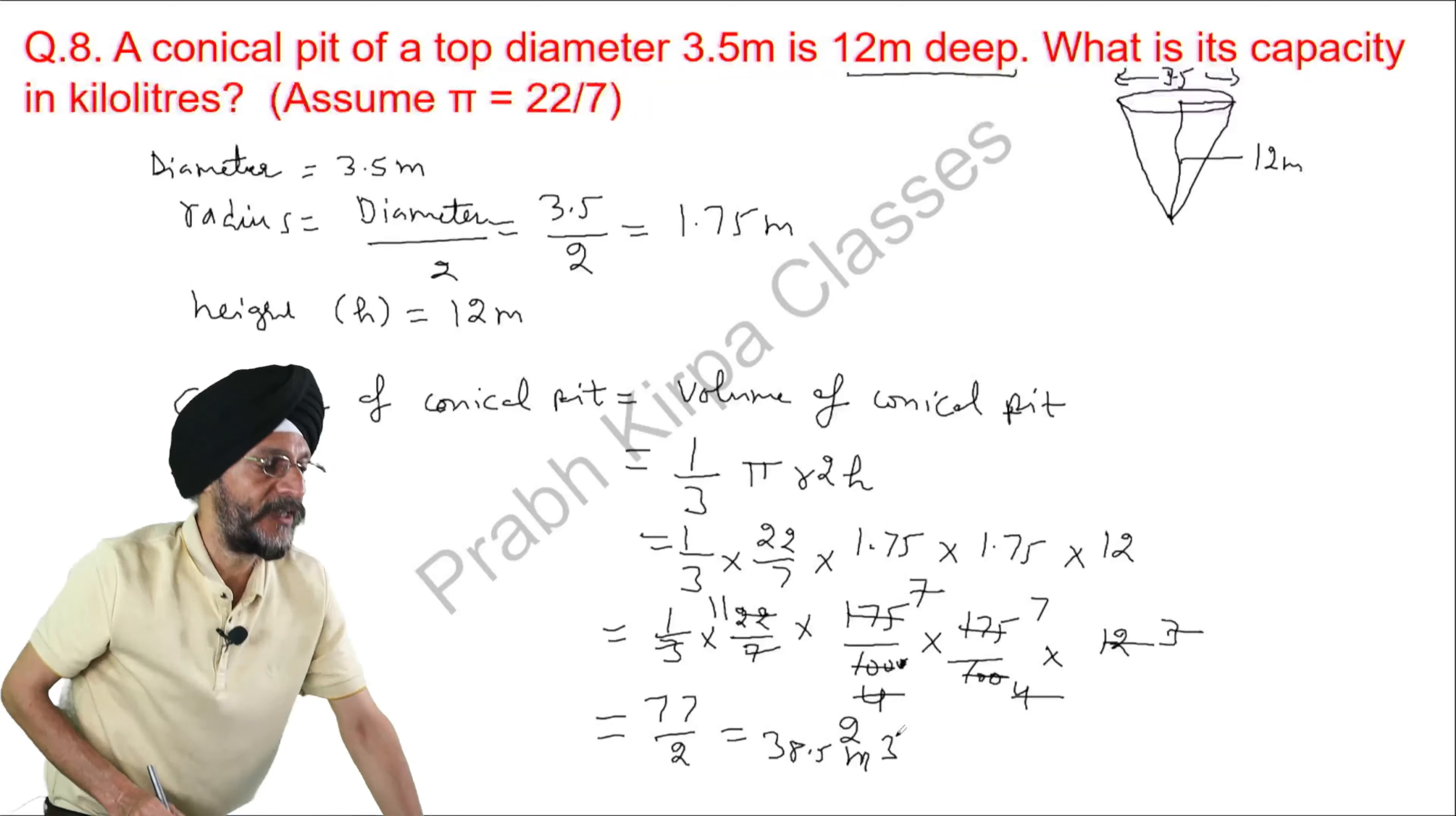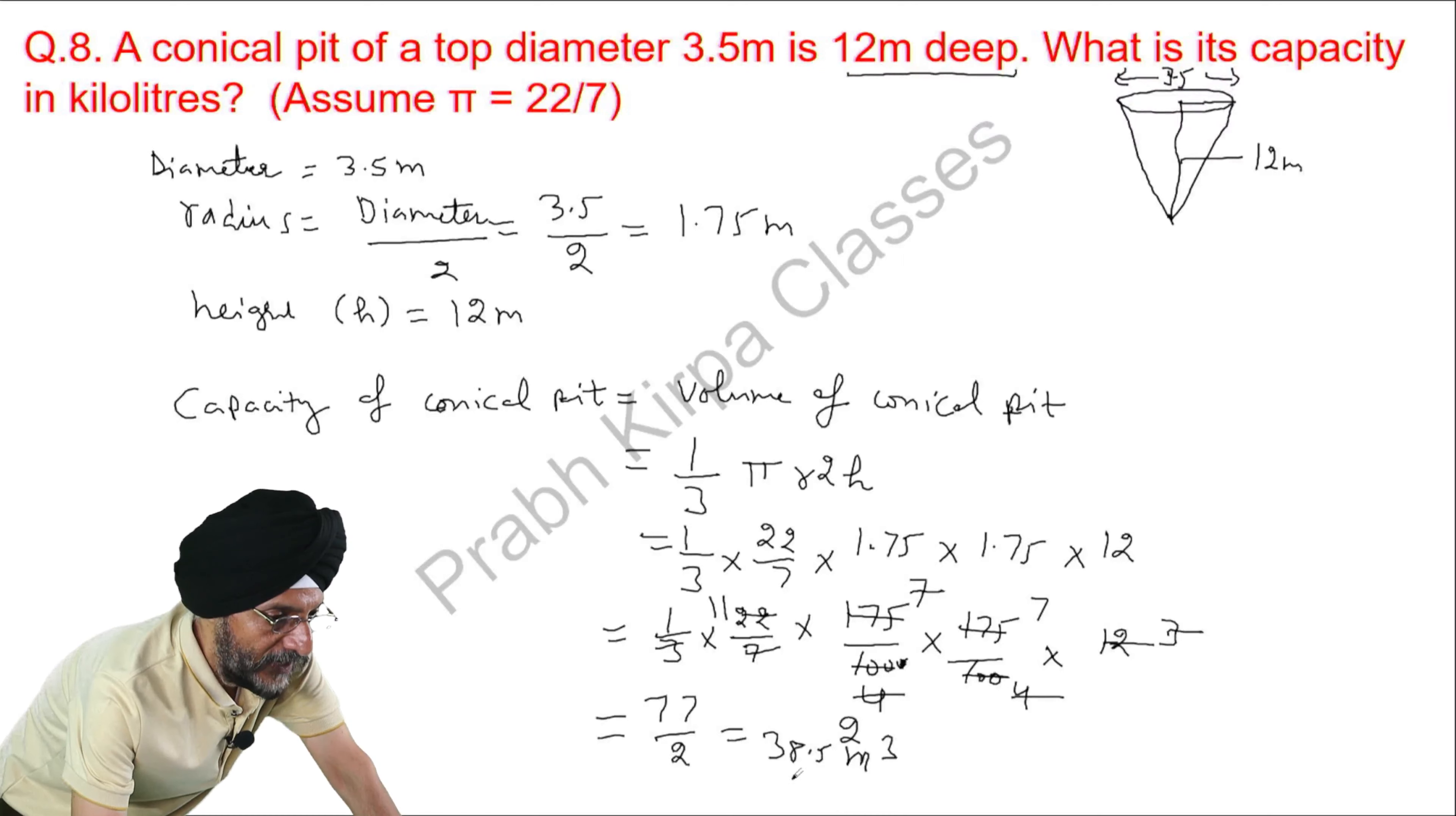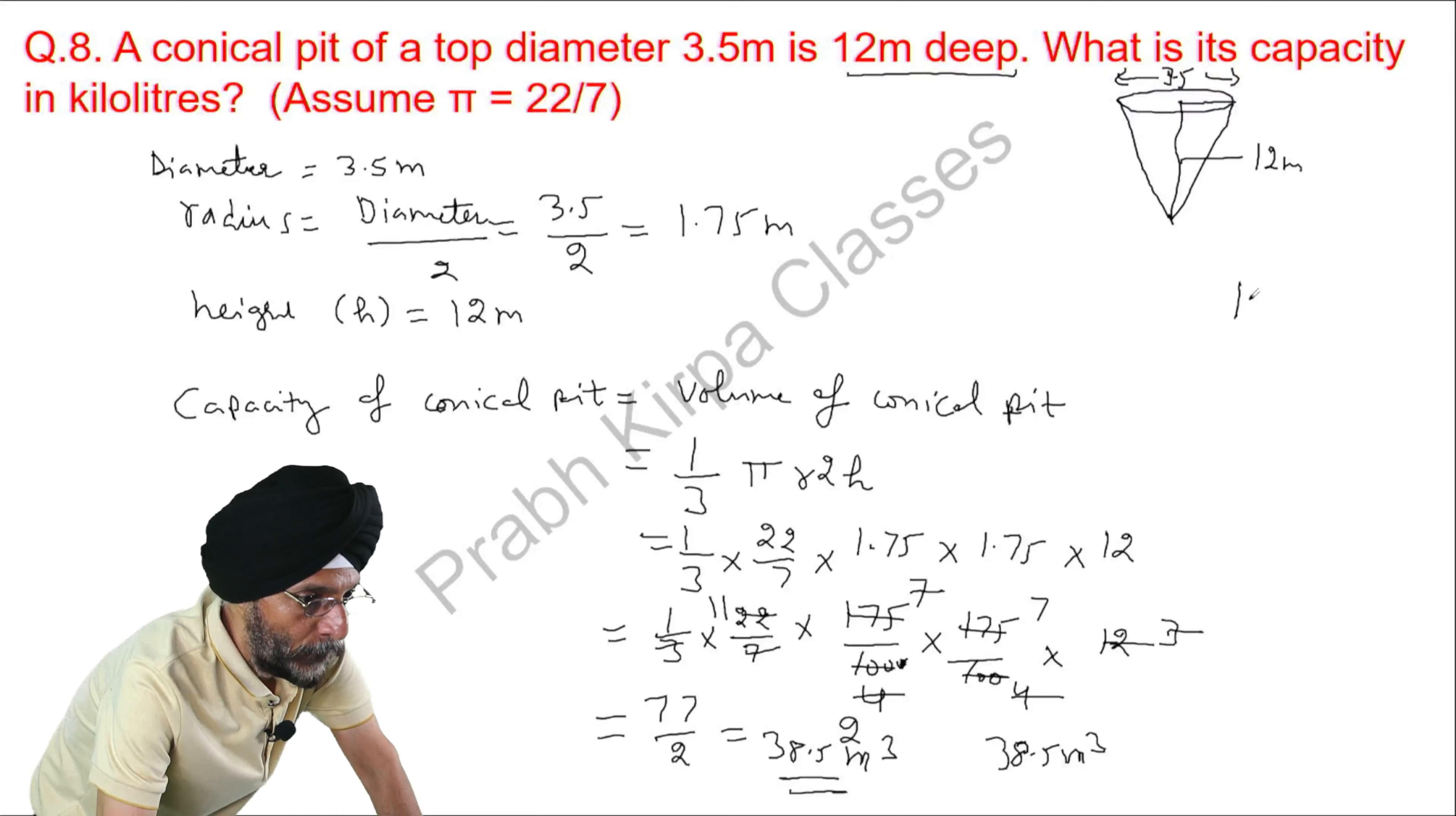So, now what we have to find is that the capacity has to be found in kilolitres. We have the answer as 38.5 cubic meter. We know that 1 cubic meter is equal to 1000 litre or we can say that 1 cubic meter is equal to 1 kilolitre.